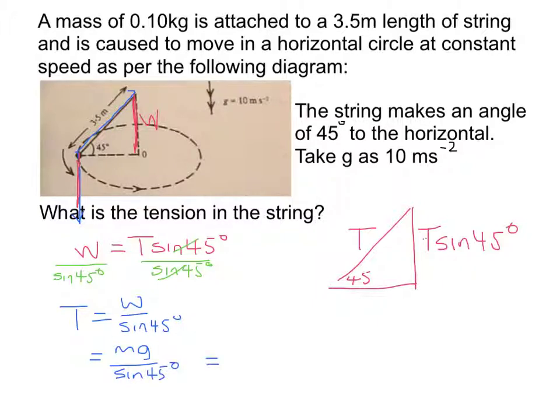Mass is equal to 0.1, gravity is equal to 10 over sine 45. And if we plug that into a calculator, we will get the value of 1.41 Newtons. And that's the answer to what is the tension in the string.